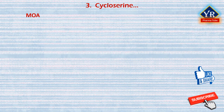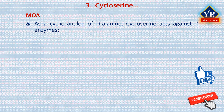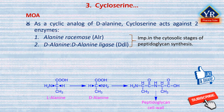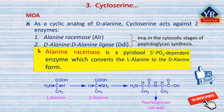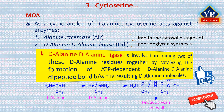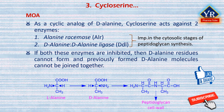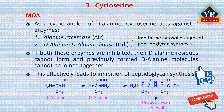Cycloserine acts as an antibiotic by inhibiting cell wall biosynthesis in bacteria. As a cyclic analog of D-alanine, cycloserine acts against two crucial enzymes important in the cytosolic stages of peptidoglycan synthesis: alanine racemase and D-alanine-D-alanine ligase. Alanine racemase is a pyridoxal-5-phosphate dependent enzyme which converts L-alanine to the D-alanine form. D-alanine-D-alanine ligase catalyzes the formation of the ATP-dependent D-alanine-D-alanine dipeptide bond. If both enzymes are inhibited, D-alanine residues cannot form and previously formed D-alanine molecules cannot be joined together, effectively leading to inhibition of peptidoglycan synthesis.